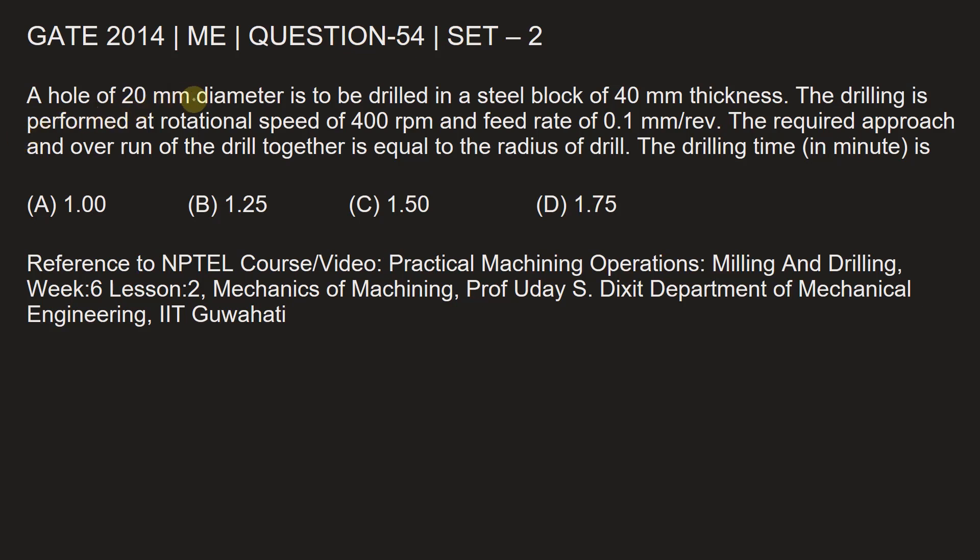A hole of diameter 20 mm is to be drilled in a steel block of 40 mm thickness. The drilling is performed at rotational speed of 400 rpm (revolutions per minute) and feed rate of 0.1 millimeters per revolution. The required approach and overrun of the drill together is equal to the radius of the drill. The drilling time in minutes is?